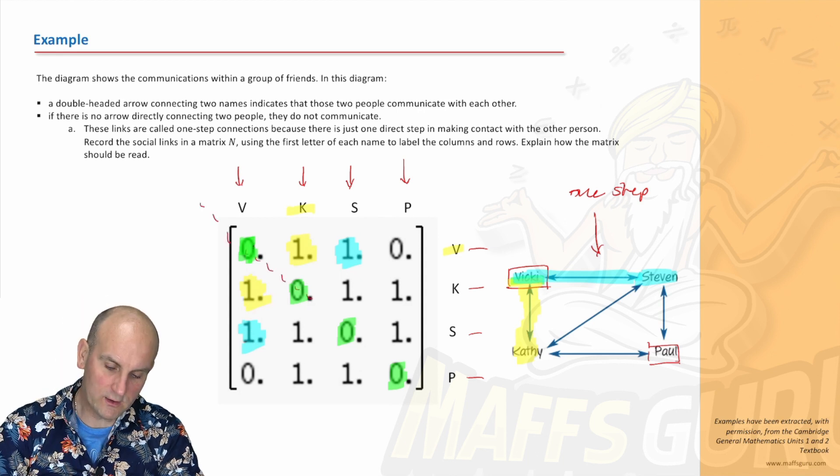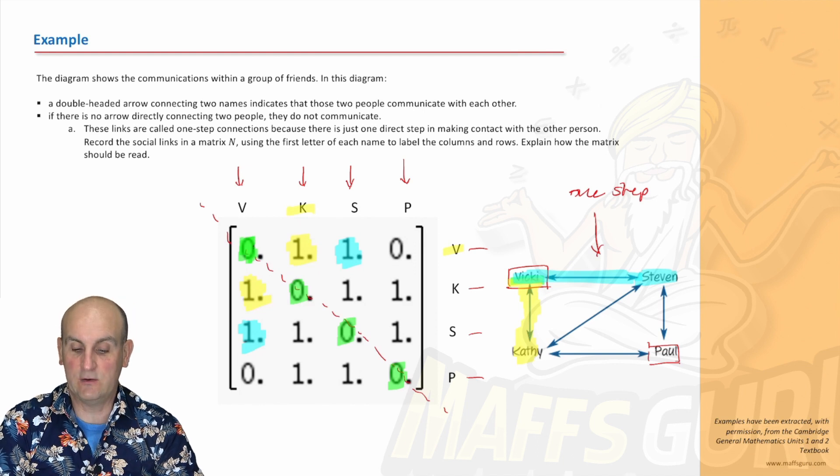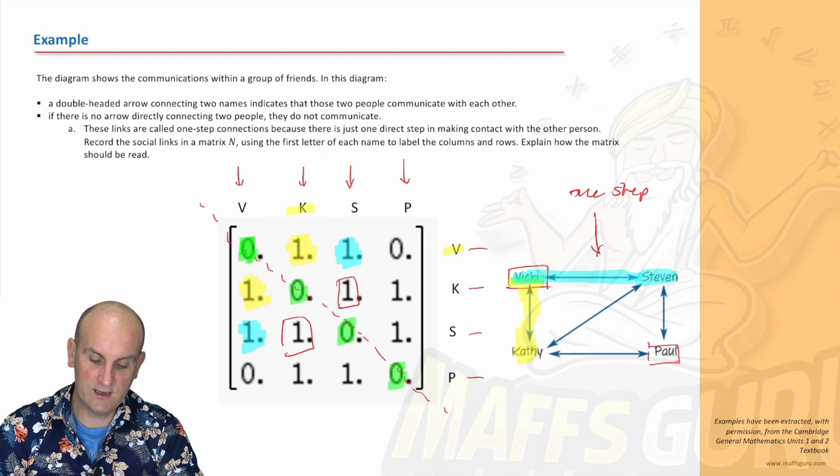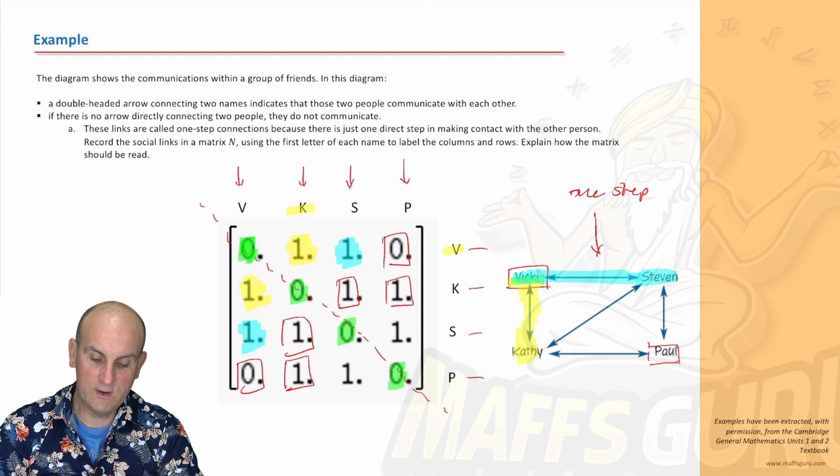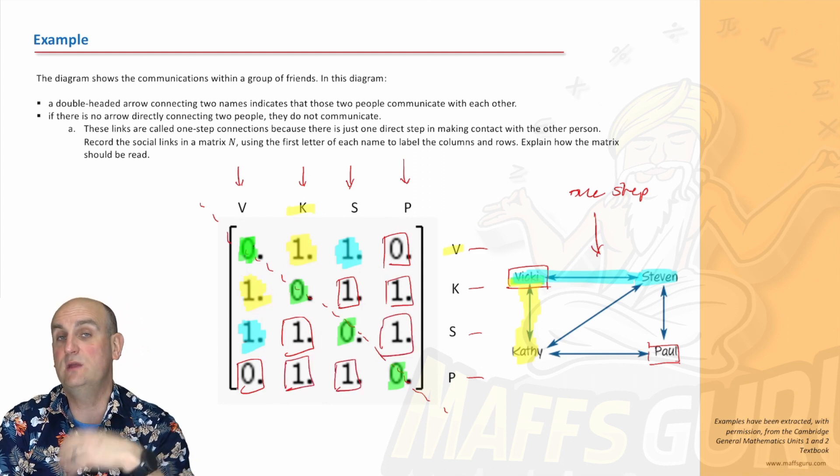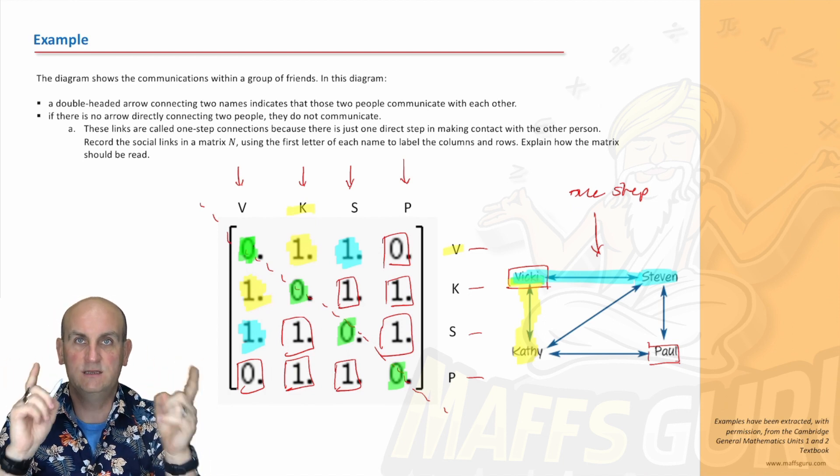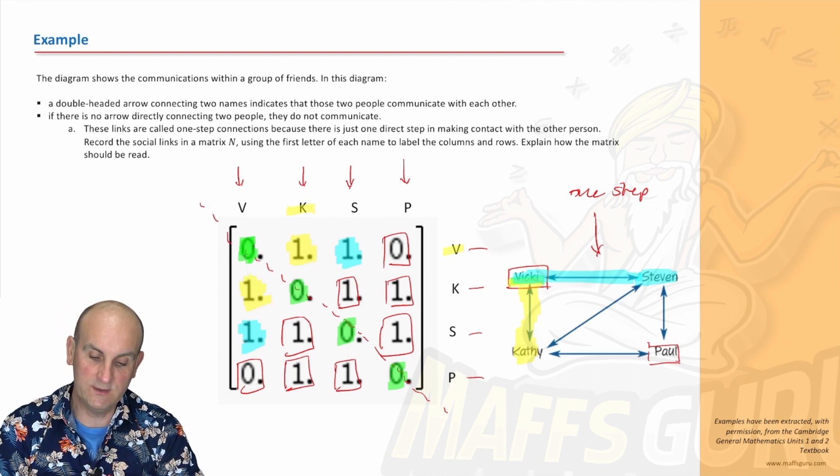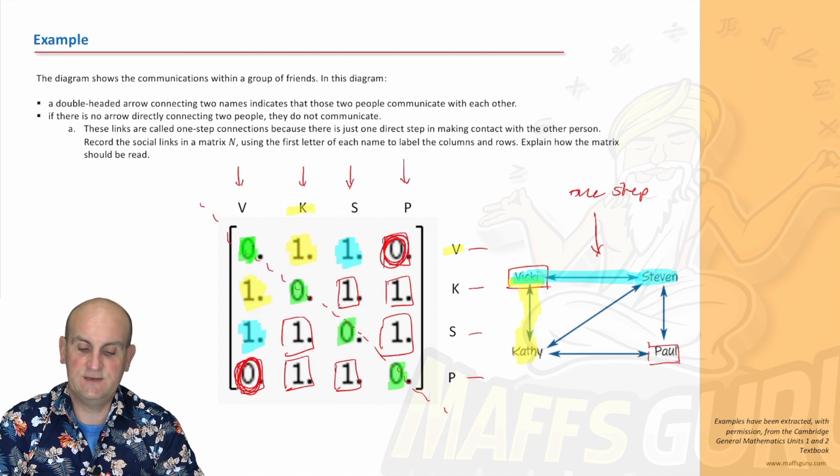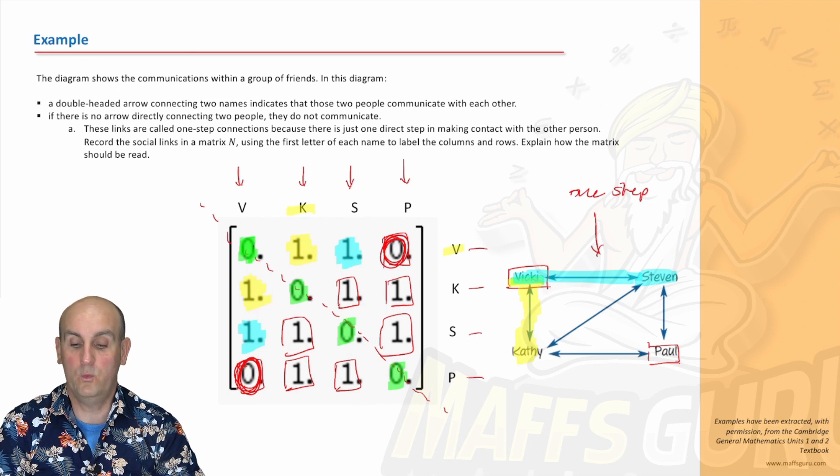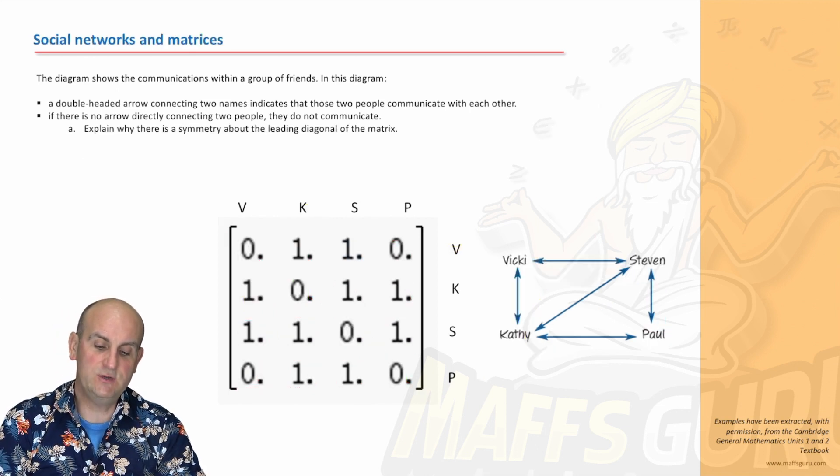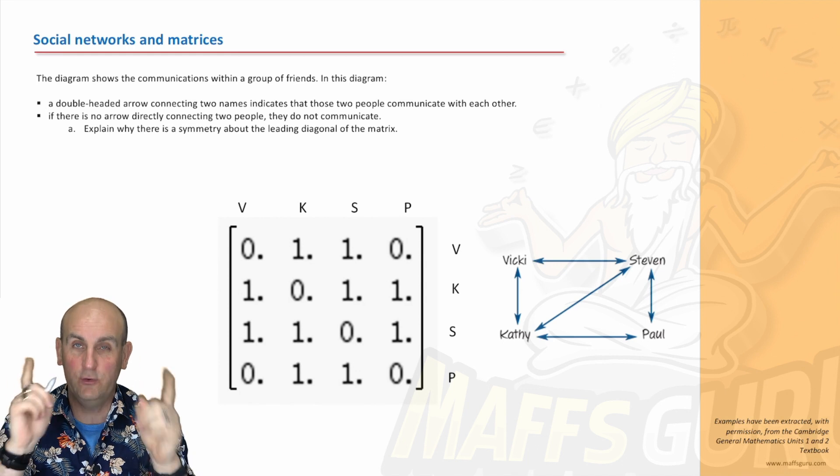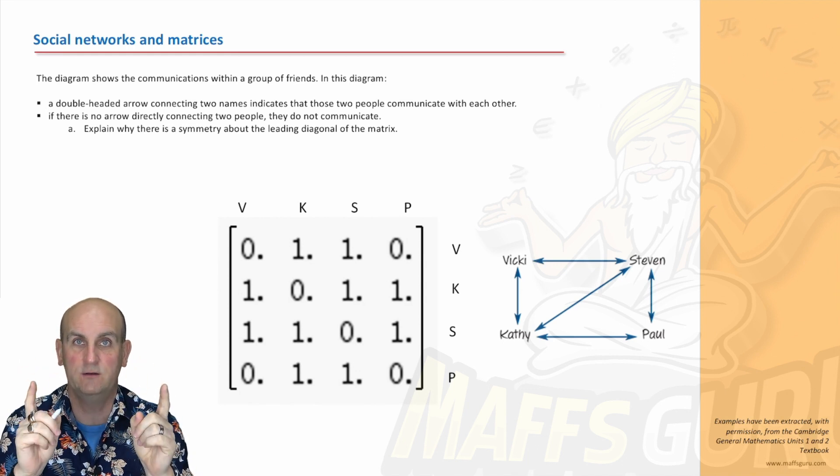Do you notice there's a bit of symmetry happening here? If I draw a dotted line down the leading diagonal, what we now notice is there is some symmetry. That value there matches that value there. The reason we have symmetry is because they're both communicating with each other, two-way communication.